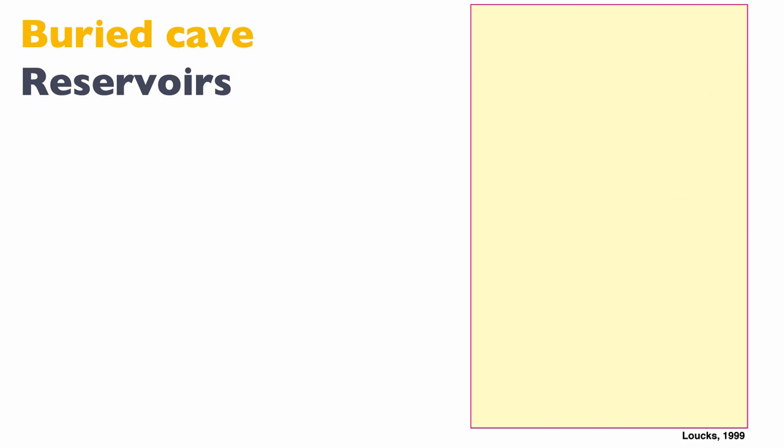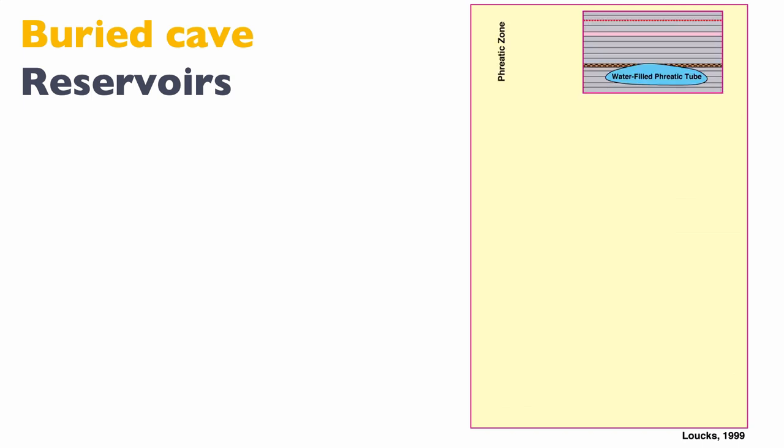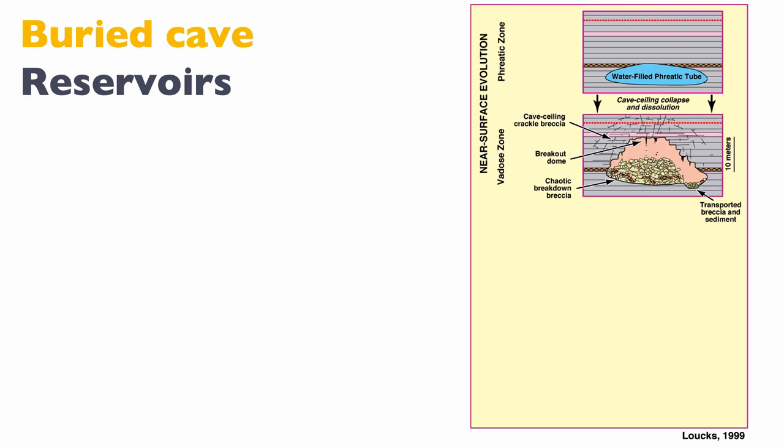So how does a buried cave reservoir work? First, you need to form a cave. Most caves start their lives as a water-filled phreatic tube in the phreatic zone. Eventually the water table goes down, and we enter the vadose zone. In the vadose zone, because you no longer have water in the tube, you are in a disequilibrium condition. To reach equilibrium, you get collapse from the rooftop — blocks collapsing from the rooftop — forming a cavity, a cave.